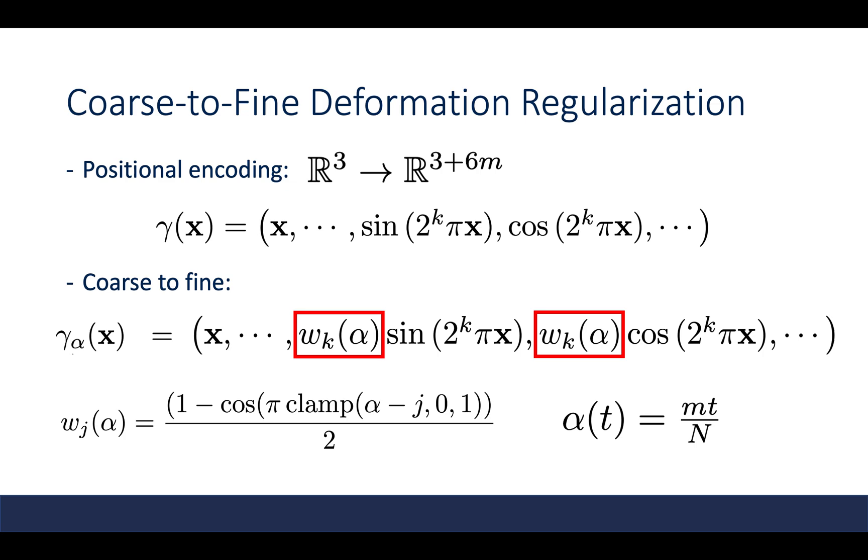To achieve this, they adopt a coarse to fine deformation regularization, where the frequency band is gradually increased as the training iteration progresses. This means they add a term ω in front of each sine and cosine term, where ω is controlled by α defined on the bottom right, where t is the number of iterations. Namely, when t increases, ω will also increase, and higher frequency bands will be included as well.